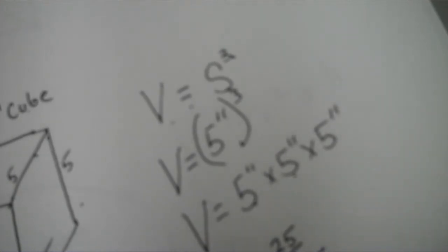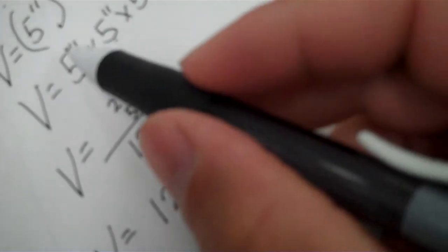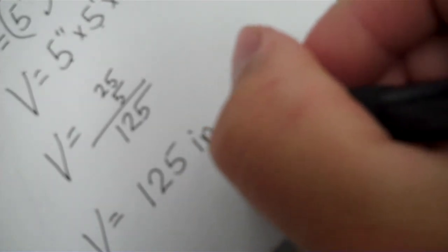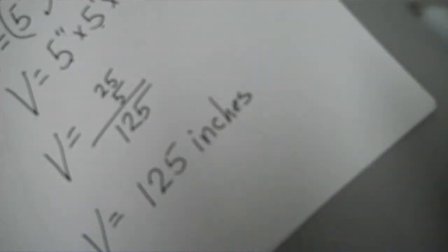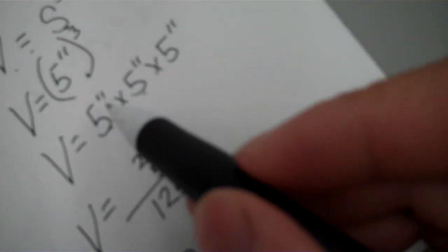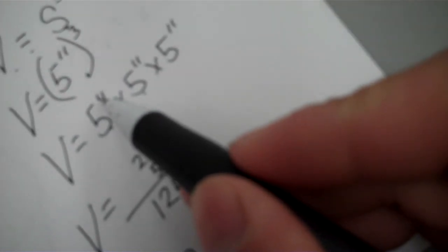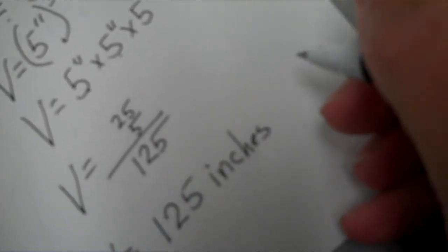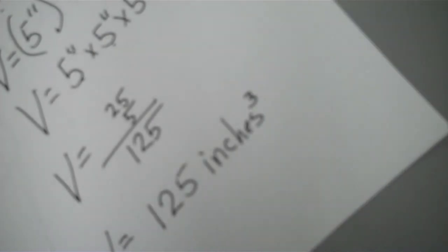Okay, so your volume would be 125. Remember it's in inches, so don't forget your unit, 125 inches. And again you're taking this unit, times it by this unit, times it by this unit, so it would be 125 inches cubed. That's your answer.